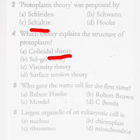Fifth question: Who gave the name 'cell' for the first time? The answer for this question is Robert Hooke. Sixth question: The largest organelle of a eukaryotic cell is the nucleus.